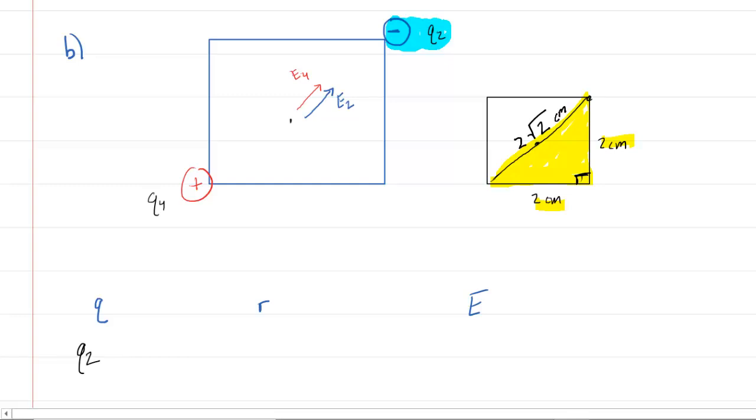However, we only want the length from the center to this corner. So basically we want half of that length. So you take 2 radical 2 and you divide it by 2 to get half of it. And when you do that, these 2's just cancel out, and that leaves you with radical 2 centimeters. So that's going to be the distance that we need. The only difficulty is that is in centimeters, so we have to multiply that by 10 to the negative 2. That's going to get it in meters.